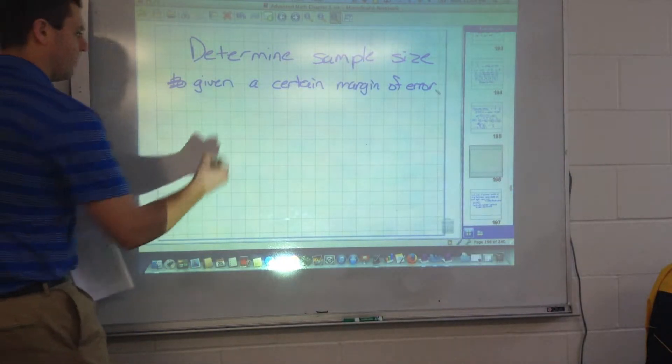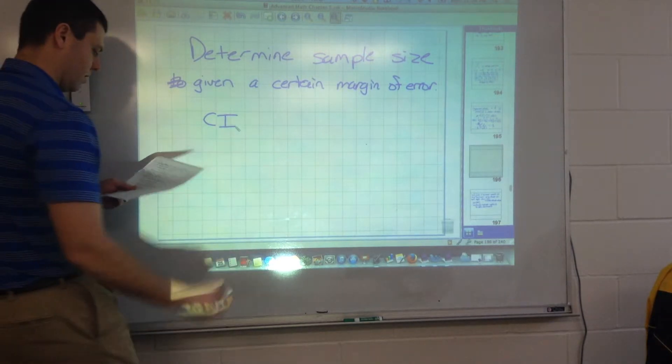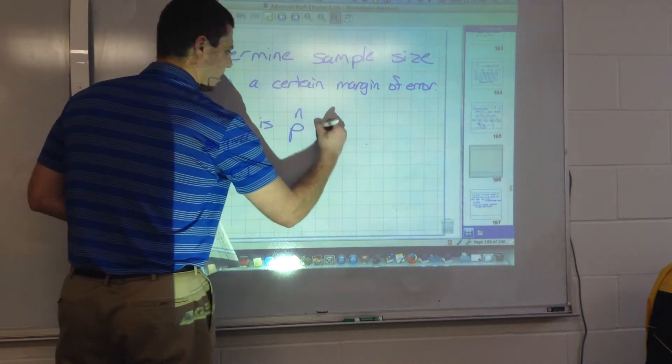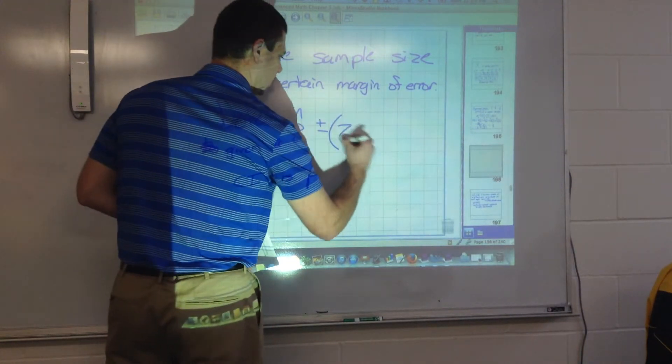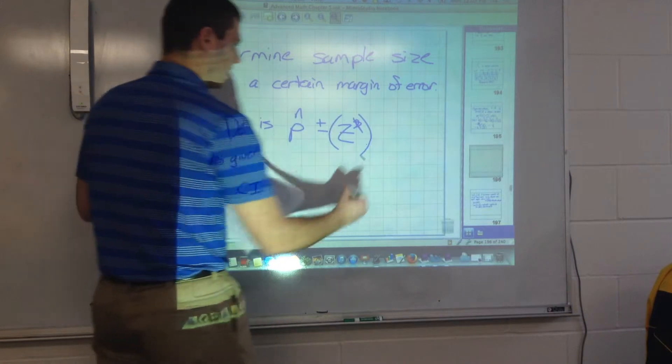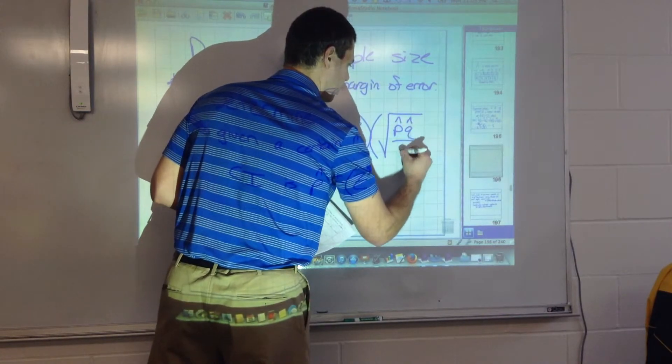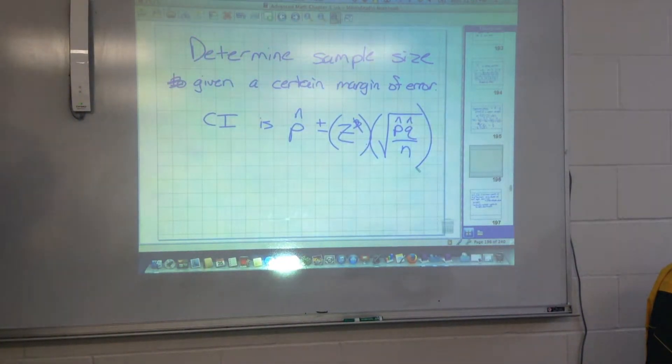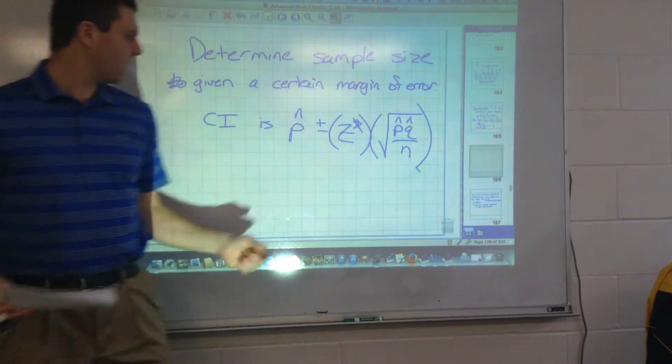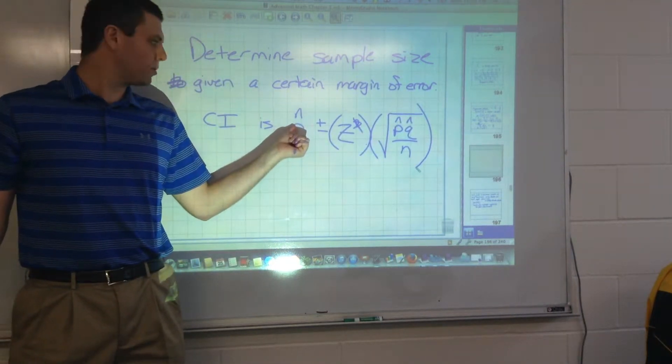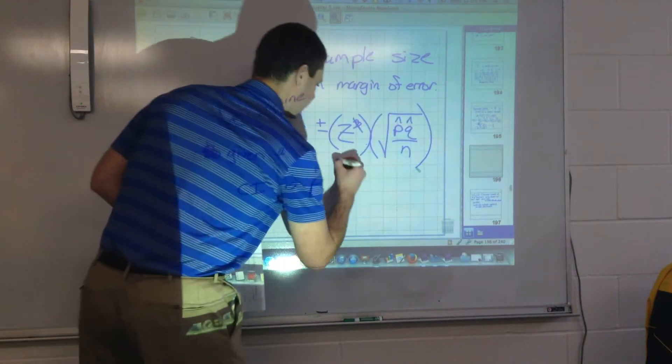So recall that on a confidence interval, you did p hat plus or minus z star times the square root of p hat q hat over n, right? That's your confidence interval. Which part of this represents your margin of error? The right side, the z star times this, because a lot of times you'll see 74% plus or minus 3%. This is your margin of error right back here.